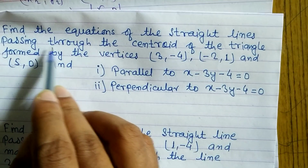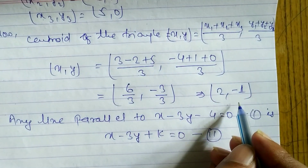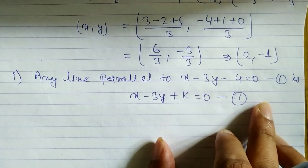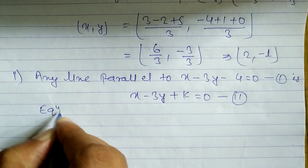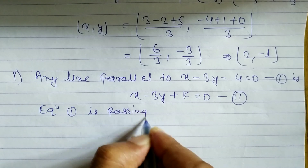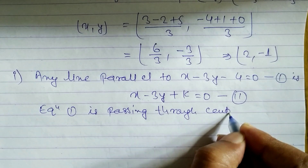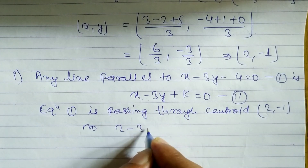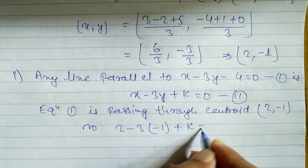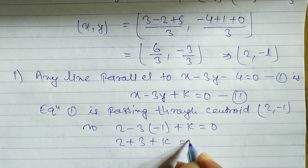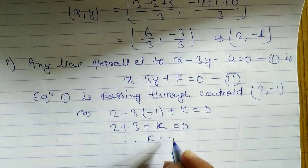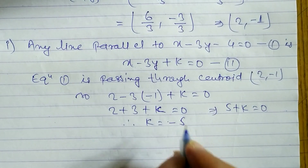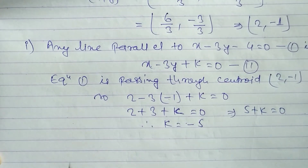This equation passes through the centroid (2, -1). Substituting x = 2 and y = -1 into x - 3y + k = 0: 2 - 3(-1) + k = 0, which gives 2 + 3 + k = 0, so 5 + k = 0, therefore k = -5.